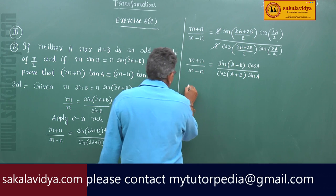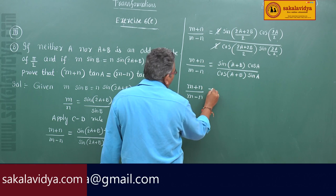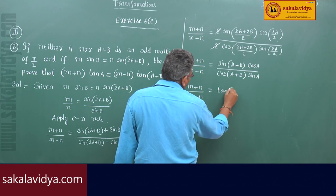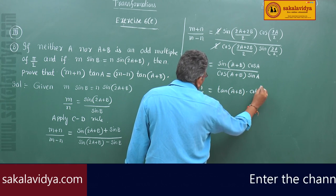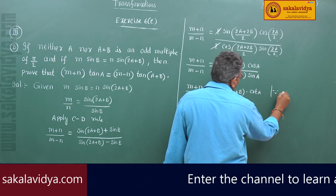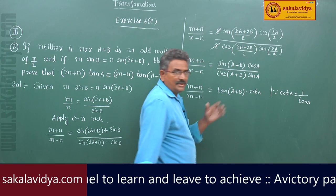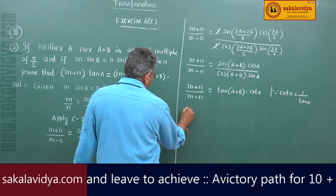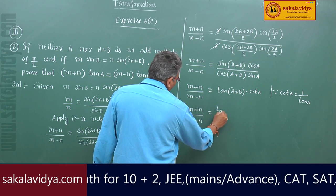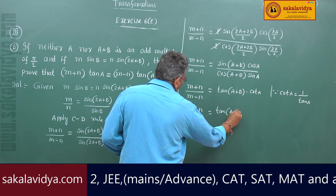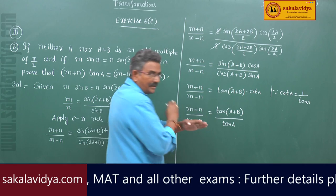So (m+n) by (m-n) is equal to tan(A+B) divided by tan(A). By cross multiplication, (m+n)·tan(A) equals (m-n)·tan(A+B).